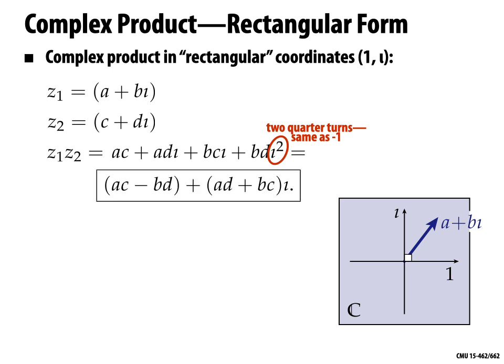Our final expression is (ac − bd) + (ad + bc)i. For convenience we call the first part the real part, denoted Re(z1·z2), and the second part the imaginary part. But importantly, these are just names — there's nothing more 'real' about the real part than the imaginary part. It's a number describing how far that vector points in the horizontal and vertical directions. These are just funky names which for historical reasons are called the real and imaginary parts.